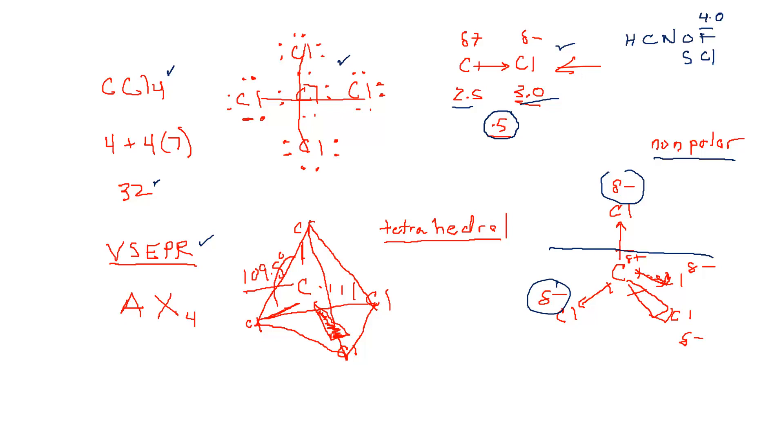The next step is we have to do the valence shell electron pair repulsion theory. Apply that to this Lewis structure to determine what the three-dimensional geometry of the molecule is going to look like. This is AX4. We have four bonding pairs coming off the central atom of carbon. AX4, how do you keep four things as far away from each other as possible? You've got to think in three dimensions and that is this tetrahedral geometry.